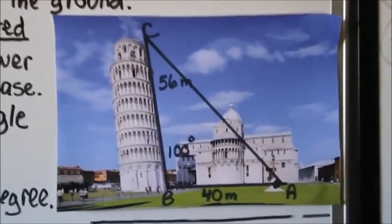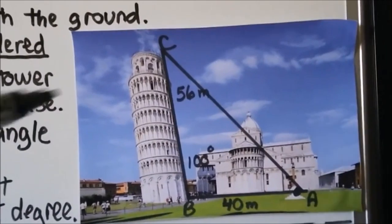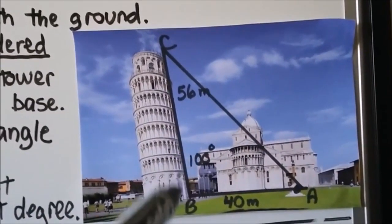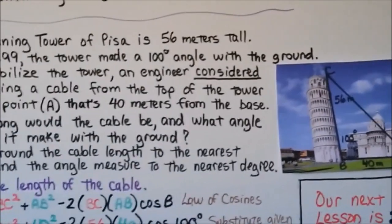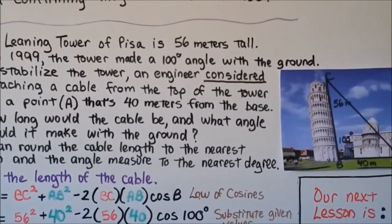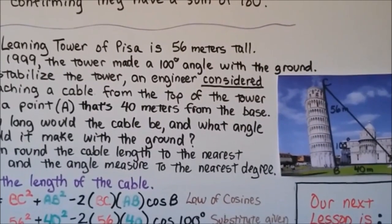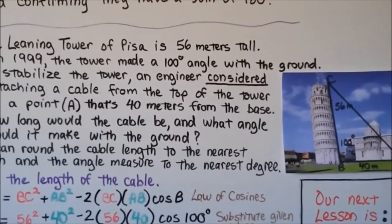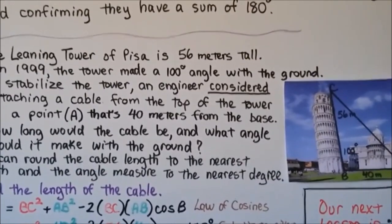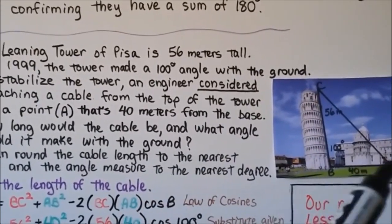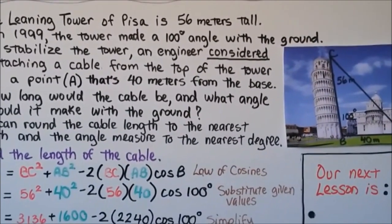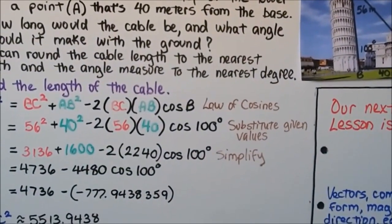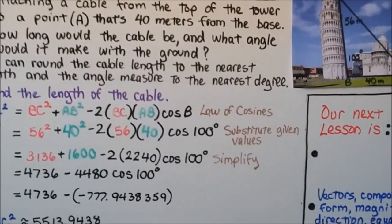Let's look at a real-world problem involving the Leaning Tower of Pisa. The tower is 56 meters tall, and in 1999 it made a 100-degree angle with the ground. We have 40 meters from the base to point A. An engineer considered attaching a cable from the top of the tower to a point A that is 40 meters from the base. We need to find how long the cable would be and what angle it would make with the ground.